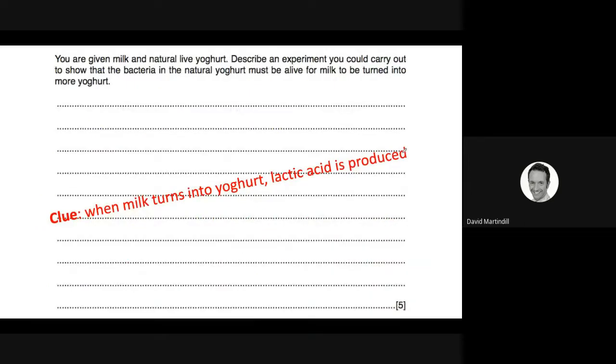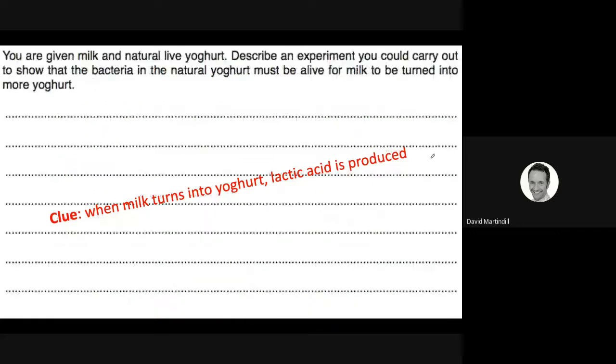You are given milk and natural live yogurt. Describe an experiment for five marks you could carry out to show that the bacteria in the natural yogurt must be alive for milk to be turned into more yogurt. It's quite a difficult question, this. A clue, because you should know this, that when milk turns into yogurt, lactic acid is produced. It's anaerobic respiration. The worst thing you can do is just leave something like this blank. What you should do if you are really stuck is simply write bullet points. Bullet point answers are not as good because you might miss out some information compared to when you write in full prose. But the examiner will still mark bullet points just as if it was a full paragraph of text.